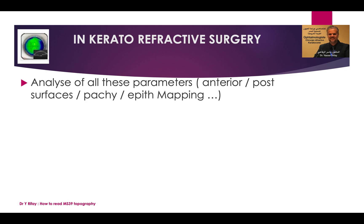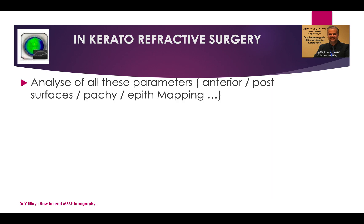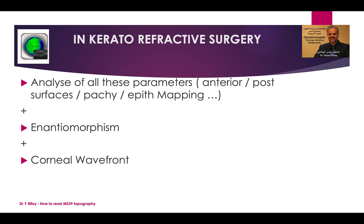In keratorefractive surgery, the decision is multifactorial. You have to analyze all parameters: anterior and posterior surfaces, pachymetry, epithelial mapping, and all this. You have to compare both eyes — right eye with left eye — and look for antimetromorphism. You should analyze the corneal wavefront and look for high-order aberrations. Then combine all this with the clinical data of the patient.